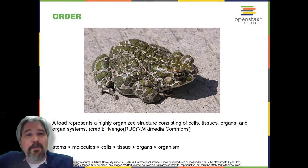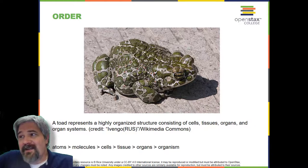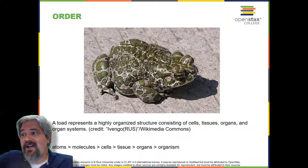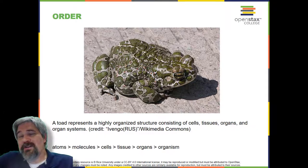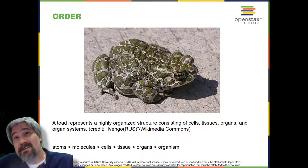The basic hierarchy of what comprises an organism is as pictured here, going from atoms, molecules, to cells, tissues, organs, and then organisms or organ systems.